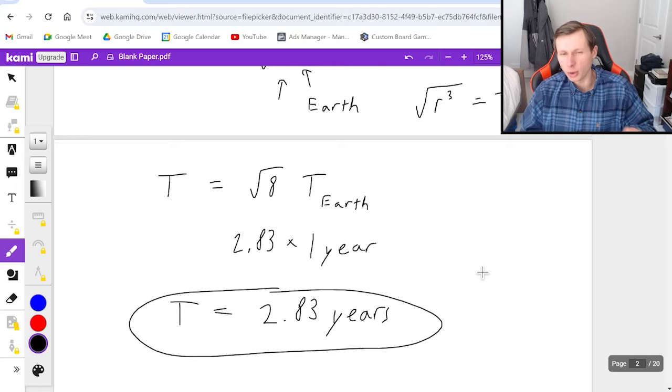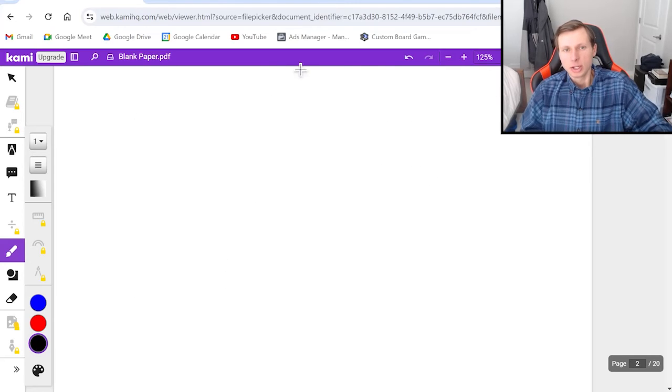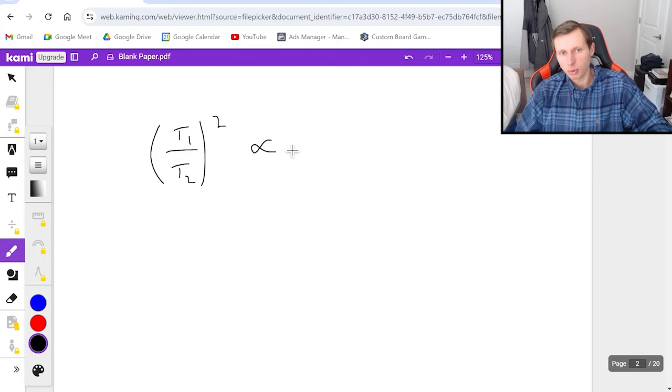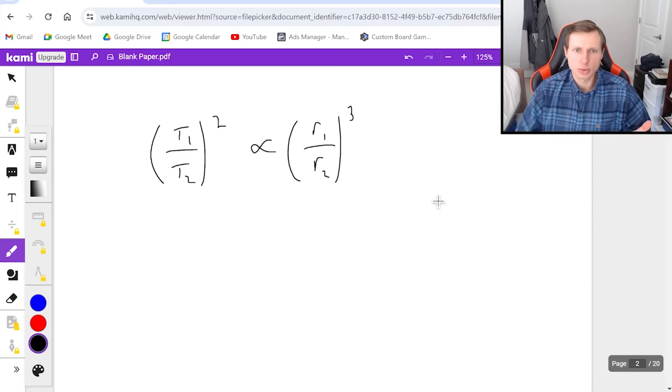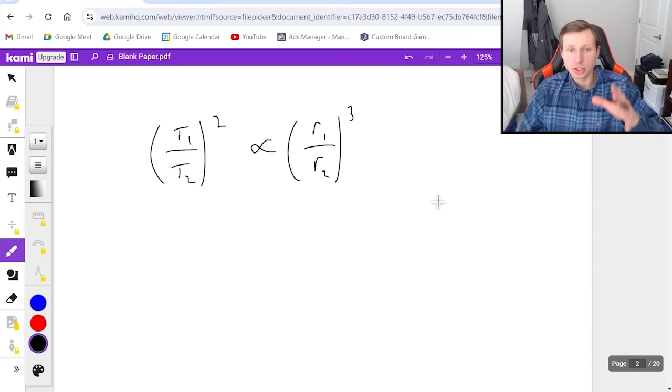Now by the way, there is another way you can solve this problem. You can also solve it using a ratio. Specifically, T1 over T2, quantity squared, is proportional to radius 1 over radius 2, quantity cubed. You can do this as well, and I'm going to show you how to use this equation for the next problem.